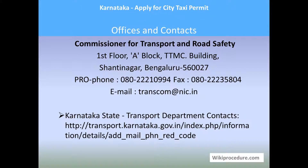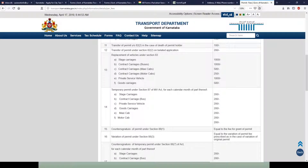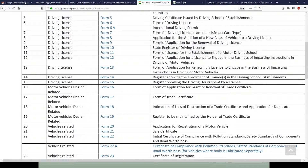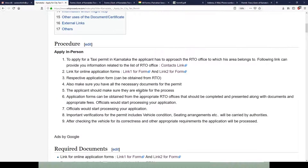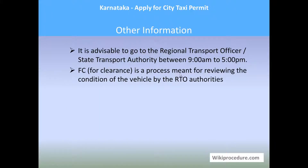Offices and contacts: Commissioner for Transport and Road Safety, TTMC Building, Shantinagar, Bangalore — 27. Full contact details are provided on the page. A link is also provided to reach the Karnataka State Portal contact page for RTO office addresses across the state. Online resources: all the links provided give access to the websites used throughout this procedure, which contain useful and authoritative information. Other information: it is advisable to visit the RTO or STA between 9 AM and 2:30 PM. The Fitness Certificate (FC) clearance is a process for reviewing the vehicle's condition by RTO authorities for use on public roads.